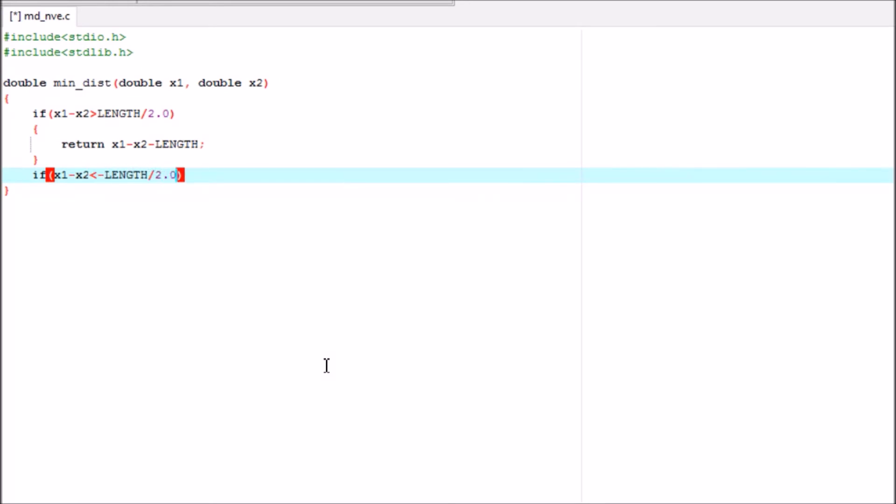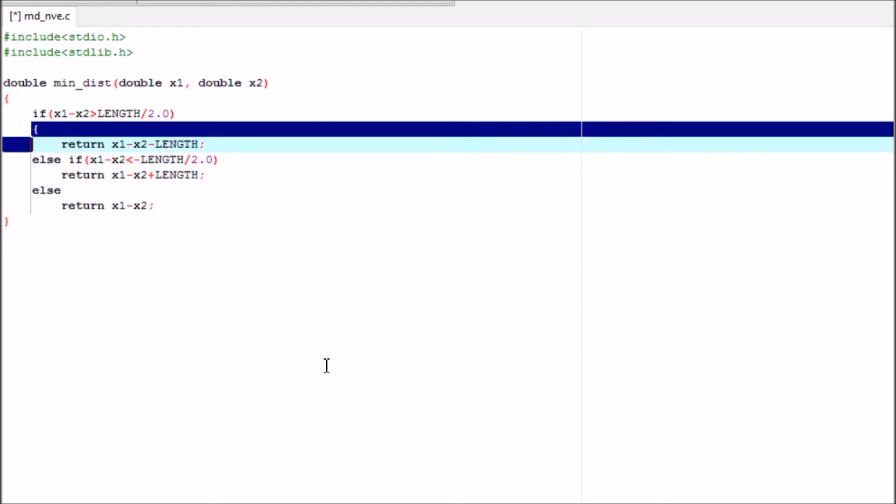Else if x1 minus x2 is less than negative length by 2, we have to return x1 minus x2 plus length. This should be else if. We can even actually remove the braces because these are just one line commands.